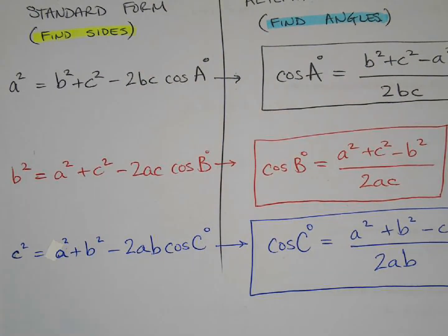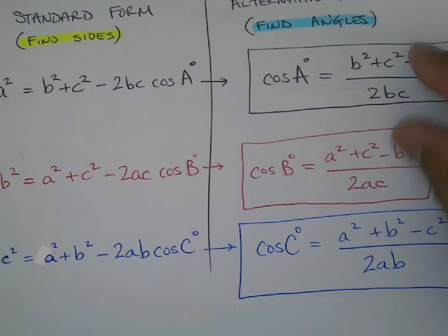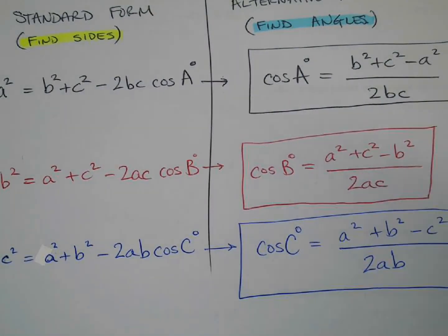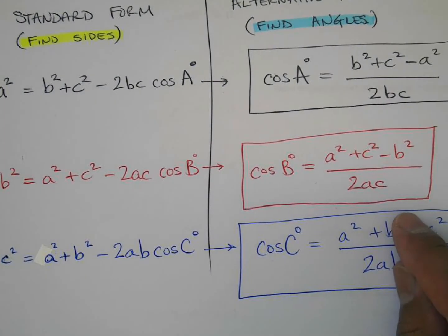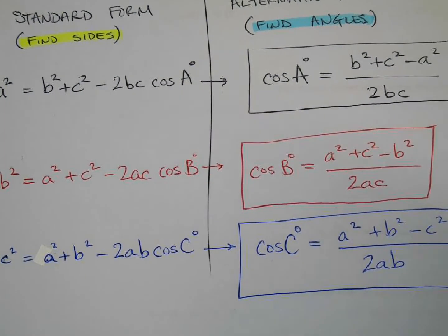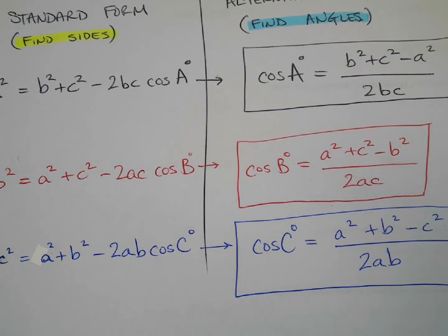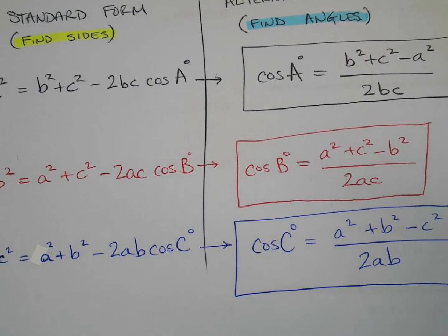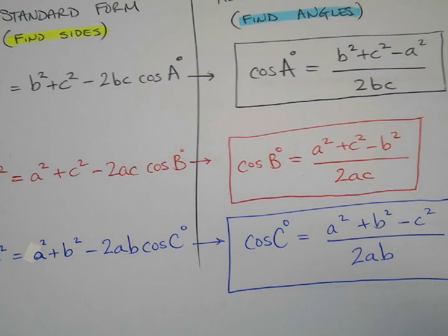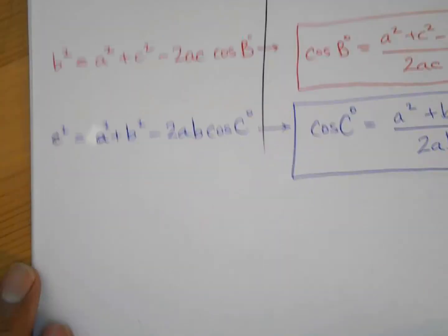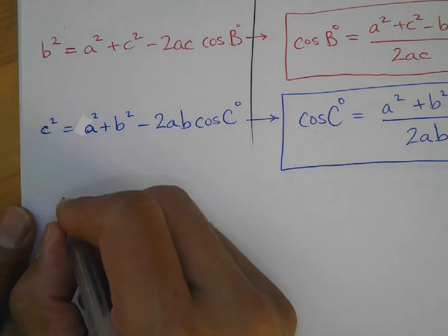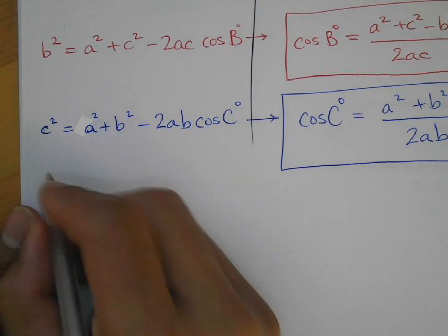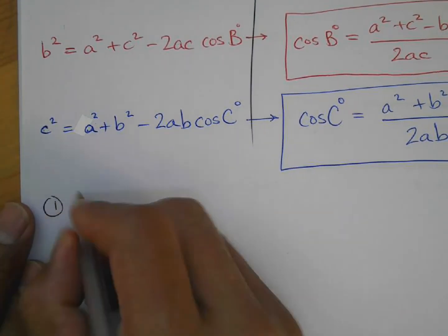These are the formulas you're going to use for finding angles. When do you use them? When you have no angles — you're not even going to have one angle. Here we go, Problem 1.